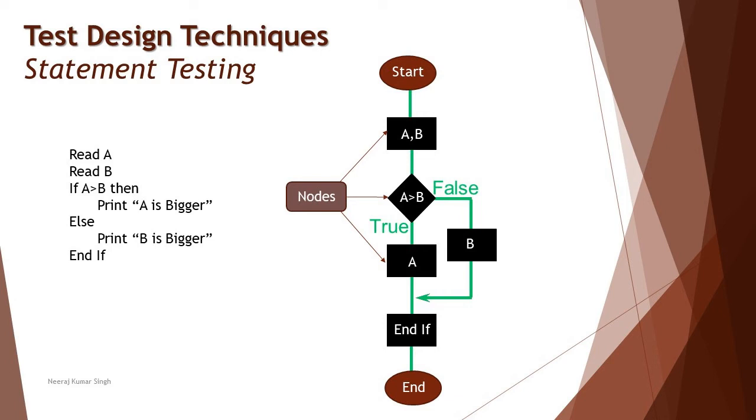Assuming there is an example here: read A, read B, if A is greater than B then print 'A is bigger', else print 'B is bigger'. I truly understand no matter you come from a non-IT background or non-technical background, everyone understands a particular condition that if I have a condition it has two outcomes: either it is true or it is false.